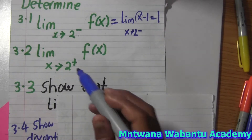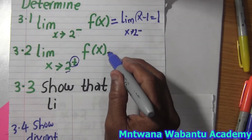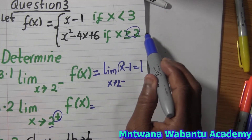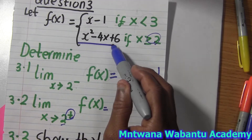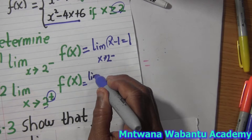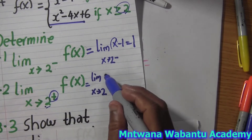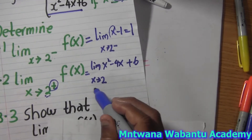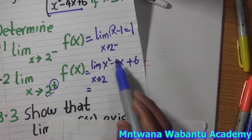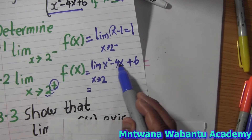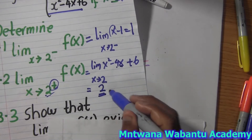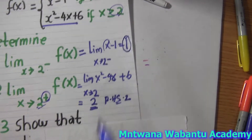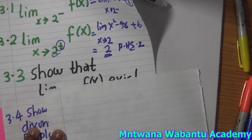Now for the limit as x approaches 2 from the right. From the right means x is greater than or equal to 2, so we use the quadratic function f(x) = x² minus 4x plus 6. Substituting x = 2: 2 squared equals 4, minus 4 times 2 equals 8, so 4 minus 8 equals negative 4, plus 6 equals positive 2. So the right-hand limit equals 2.